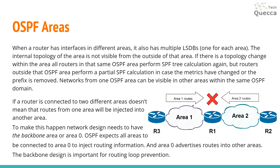Networks from one OSPF area can be visible in other areas within the same OSPF domain. However, if a router is connected to two different areas it doesn't mean routes from one area will be injected into another. For example, in this network we have three routers with area 1 and area 2. Router R1 has interfaces in two areas, but routes from area 2 cannot be injected into area 1 and routes from area 1 cannot be injected into area 2. To make this happen, the network design needs to include the backbone area, or area 0. OSPF expects all areas to be connected to area 0 to inject routing information, and area 0 advertises routes into other areas. The backbone design is important for routing loop prevention.